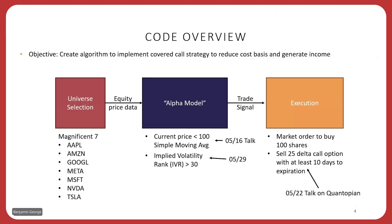We'll jump right into the code we've been building. We're trying to implement an algorithm to trade a covered call strategy, which will help us reduce our cost basis and generate income. We start with the universe of the Magnificent Seven: Apple, Amazon, Google, Meta, Microsoft, NVIDIA, and Tesla. We take price data from those stocks at minute-level resolution and pass them into our alpha model. In May we created a simple moving average indicator. A couple of weeks later we implemented an implied volatility rank estimator, recording the high and low IV, calculating the IVR, and using that as a metric before sending a trade. Our execution model sends a market order to buy 100 shares and then sells a 25 Delta call option with at least 10 days to expiration.